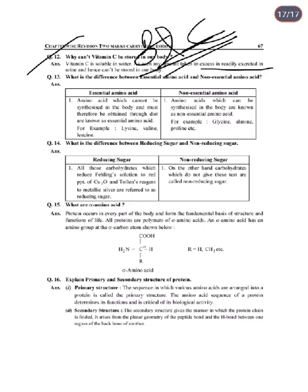Next: Difference between essential and non-essential amino acids. Essential amino acids cannot be synthesized in our body and must be obtained through diet — examples: lysine, valine, leucine. Non-essential amino acids can be synthesized in the body — examples: glycine, alanine, proline.